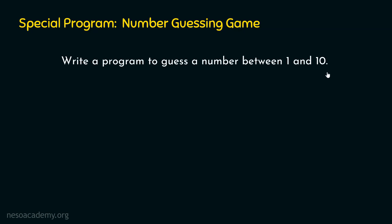If the guess made by the user is equal to the number generated programmatically, we will print 'You guessed it right.' If the guess is less than the number generated programmatically, we will print 'Your guess is too low.' If the guess is greater than the number generated programmatically, we will print 'Your guess is too high.' In this way, we need to write our program.